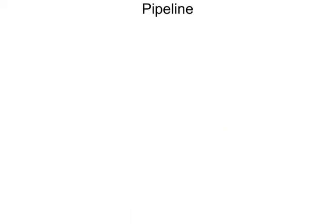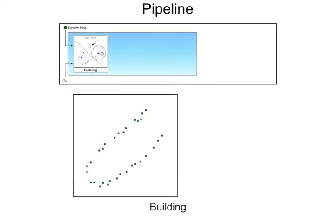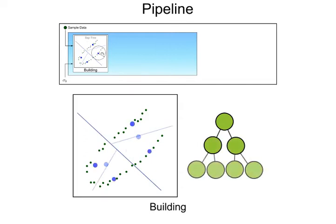Our approach is essentially based on three main steps. First, we perform a top-down hierarchical space partitioning based on the position of the data up to a limited cell size. This results in a binary tree structure.